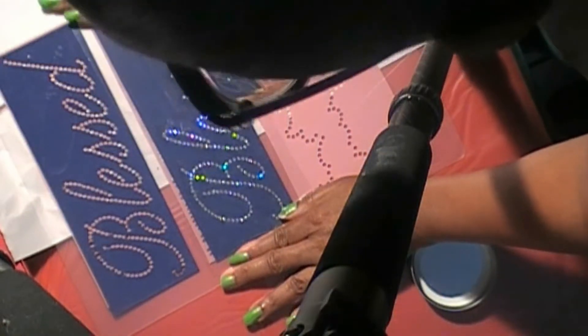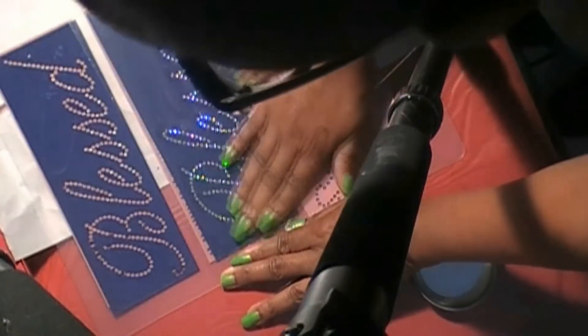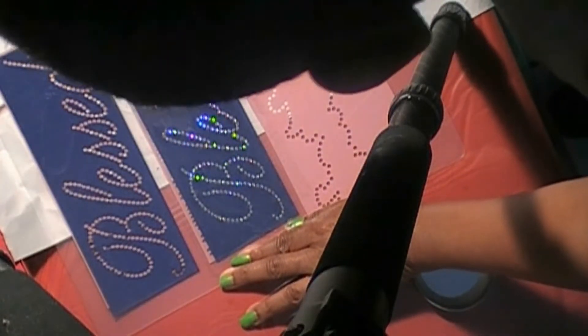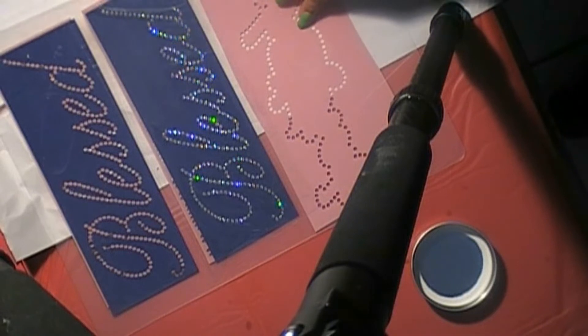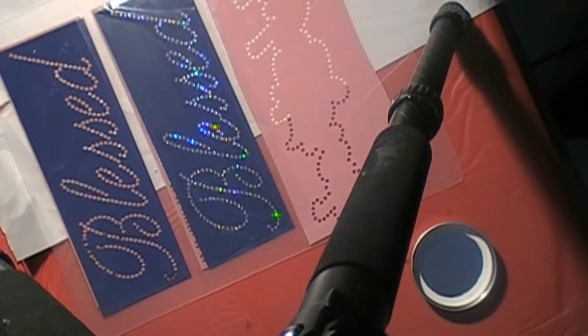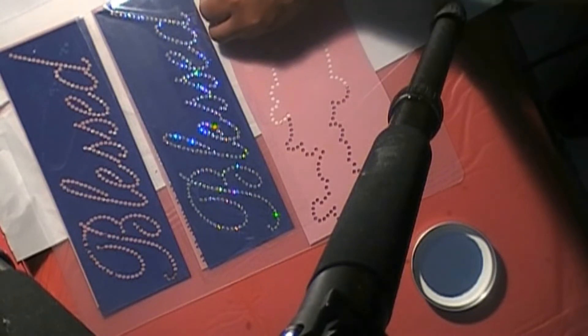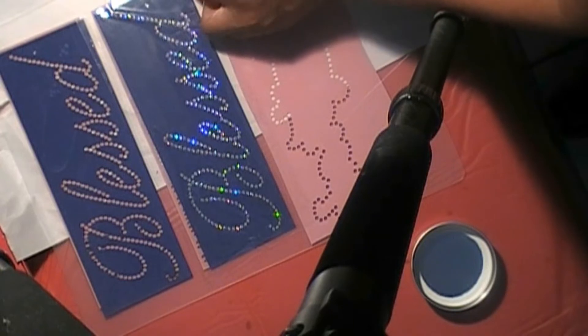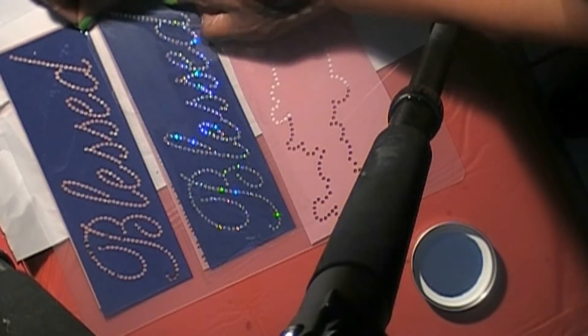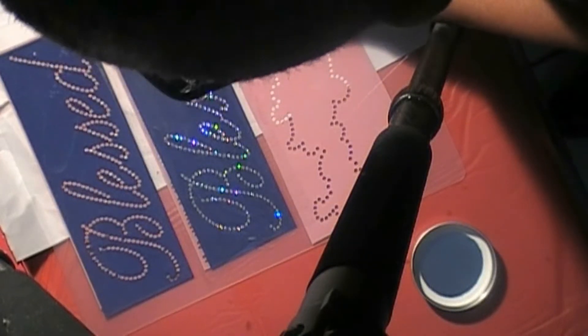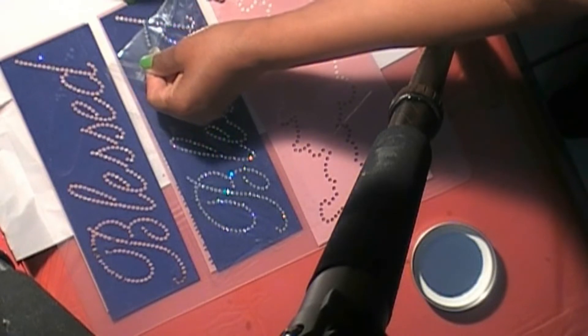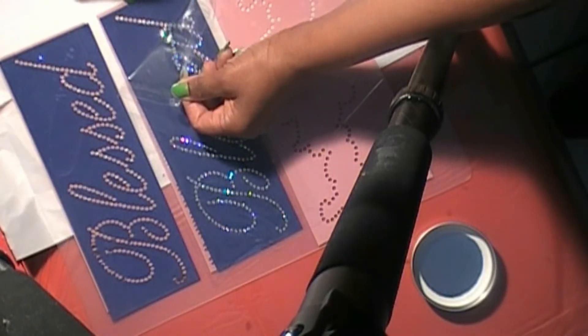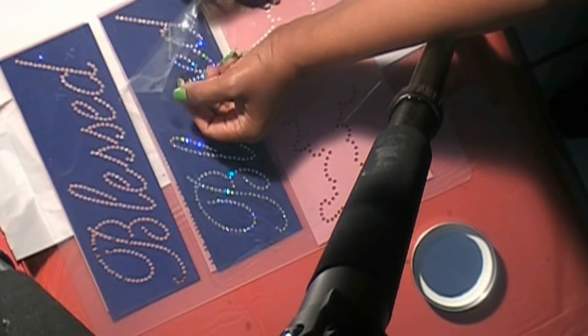Then I smooth my tape across the design so that the rhinestones can stick to the tape. Now let me get the backing so that I can pull the rhinestones up. Go slowly, don't want to jerk it because sometimes that tension from jerking it can make your stones fall off the tape.